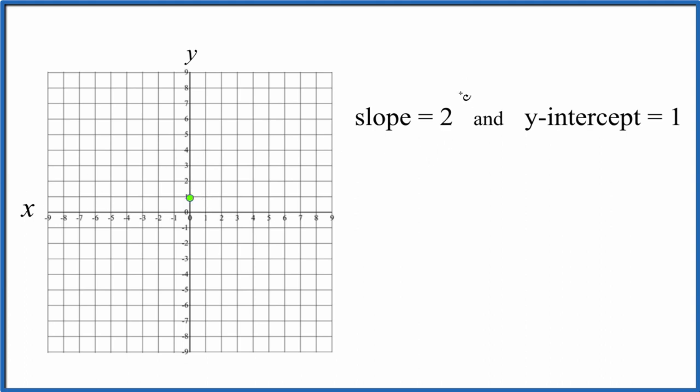For the slope we have 2. But it's helpful to think about that as 2 over 1, rise over run. Because then we can just go back to our y-intercept we just put here. Rise 1, 2 and run 1.